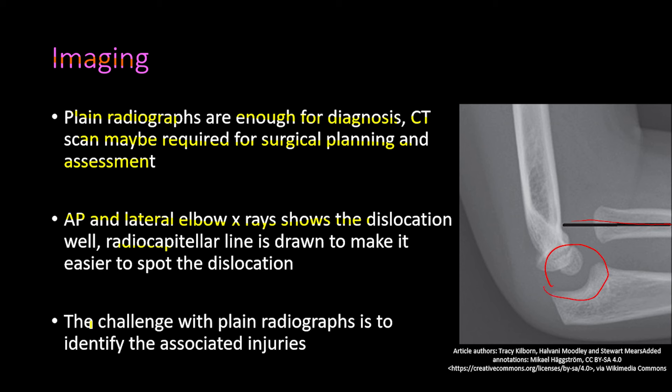Simple elbow dislocations — those not associated with fractures — are treated non-operatively with closed reduction. For the first maneuver, the patient is placed supine with procedural sedation. An assistant provides counter-traction on the proximal humerus while you hold the wrist with one hand and manipulate the dislocated elbow from underneath with the other, correcting any medial-to-lateral displacement first, then applying traction with elbow flexion to 90 degrees until the elbow relocates.